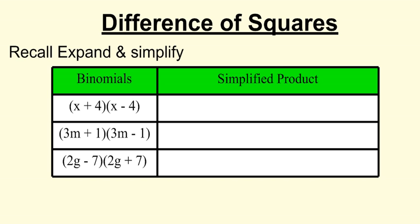Today we're going to look at factoring by difference of squares. To do that, I'm first going to quickly recall expanding and simplifying. I have two binomials: x plus 4 times x minus 4. You can see the pattern there. I'm going to use the FOIL rule to expand those. If you're unfamiliar with the FOIL rule, you can check back at one of my previous tutorials for a quick lesson.